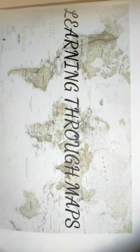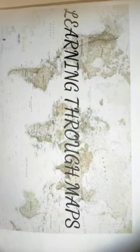In this session, we will learn the key concepts. The first is the index of a map, the second is types of maps, the third is political maps, the fourth is physical maps, and the last ones are thematic maps and historical maps. Generally, maps tell us many things about different places — like proximity to seas, mountains, plateaus, climate, natural vegetation, kinds of peoples, and their languages.